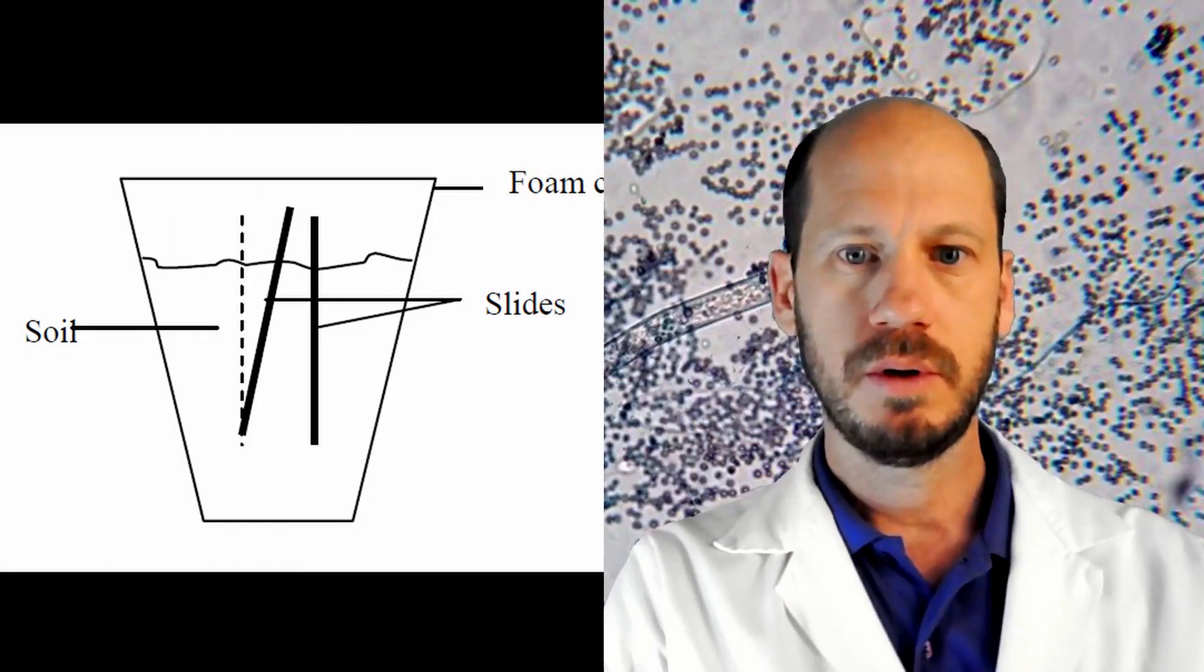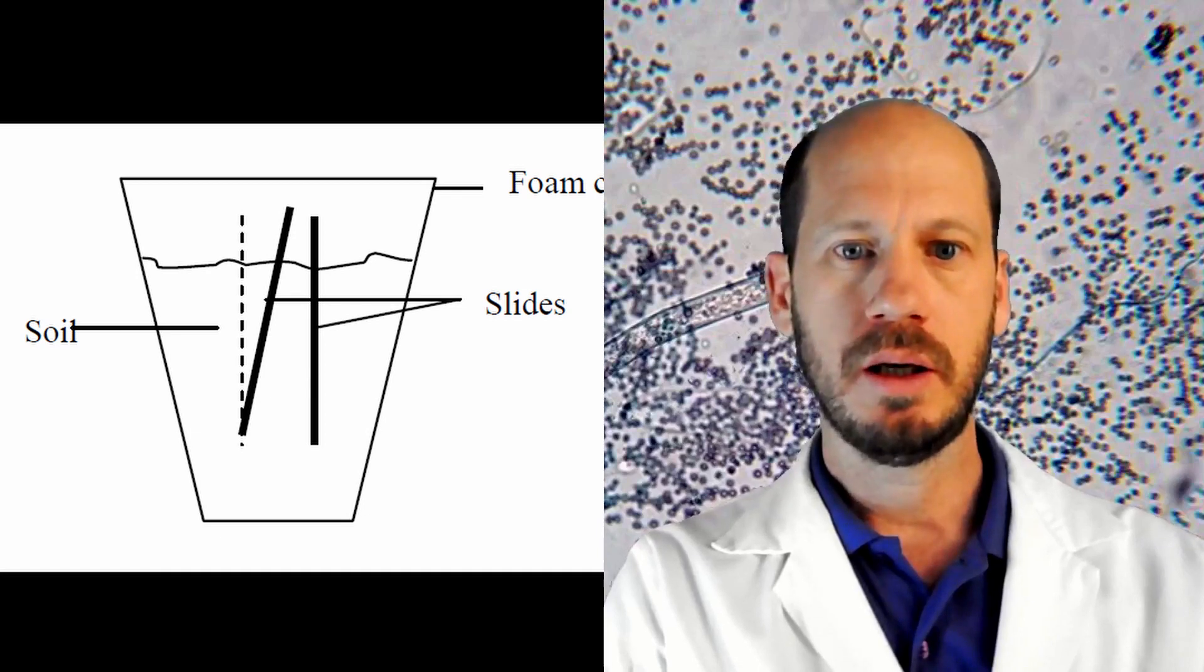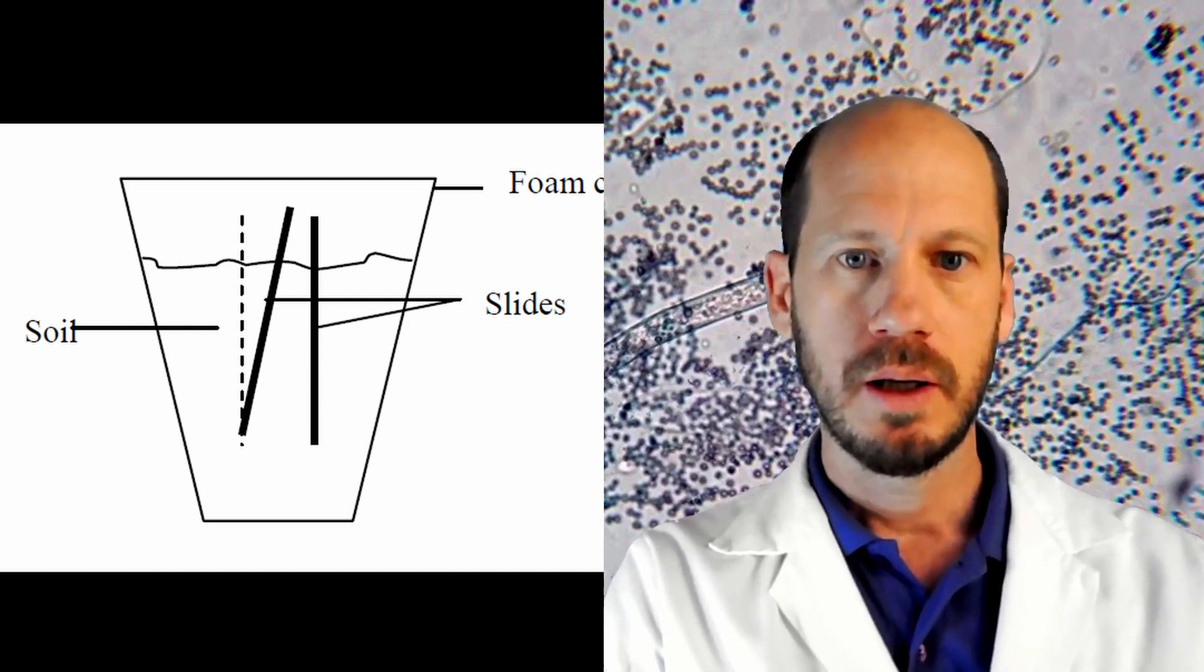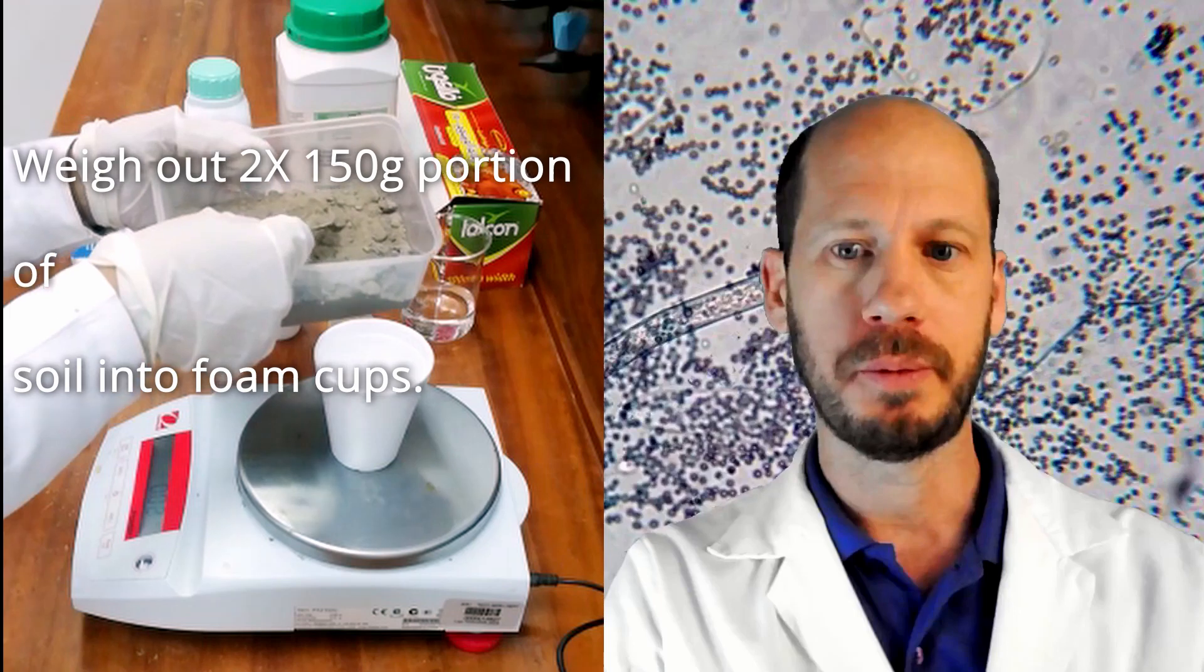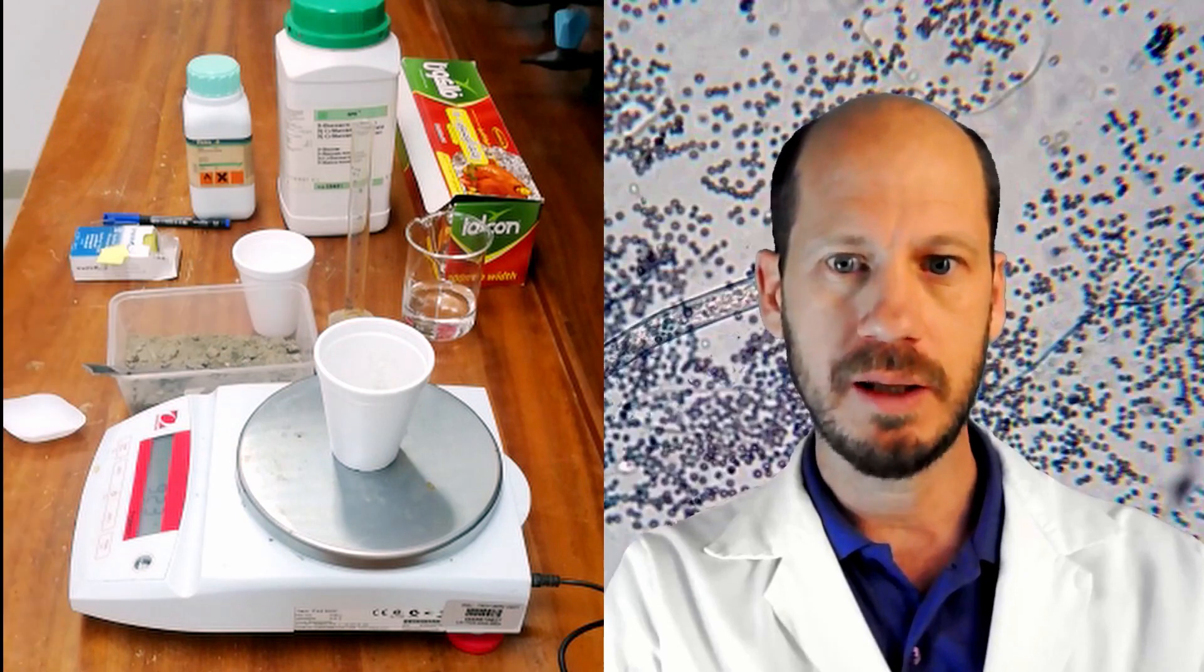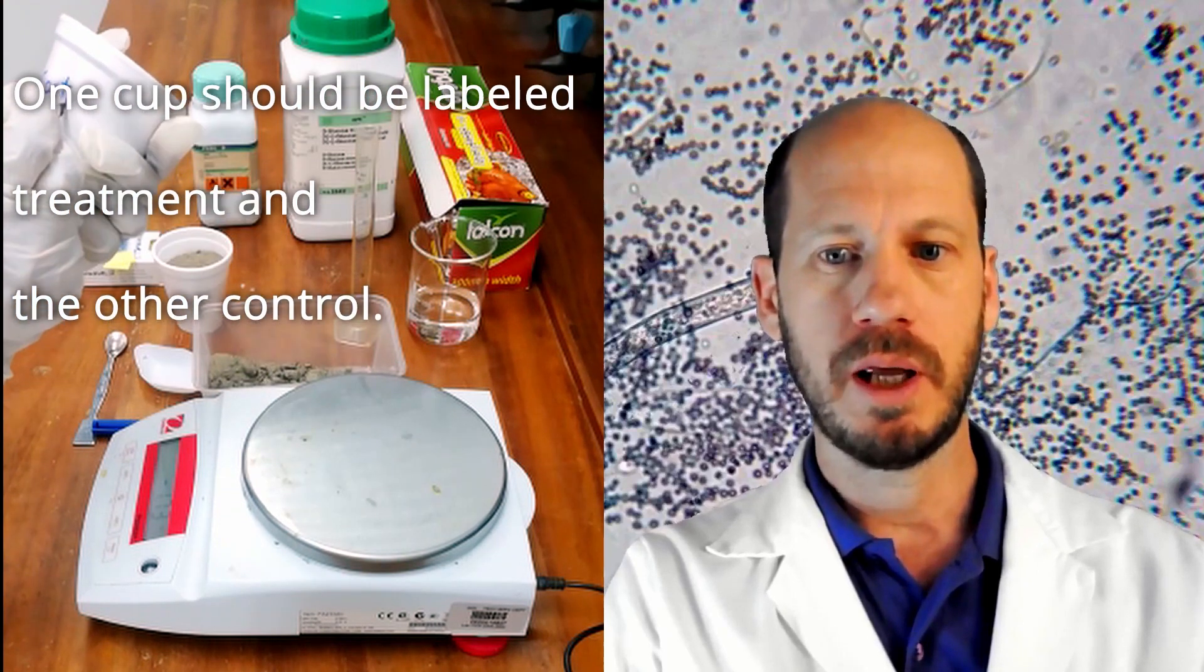I'll be showing you all the practical in this slide. First of all, this is a schematic of the foam cup that we will use and the soil inside. First we have to weigh the soil. We will weigh in two different cups and in each one of these cups we will insert two slides, 150 grams in each cup. You will see that the video is a little bit accelerated to make this more dynamic. One cup labeled as control, the other cup labeled as treatment.